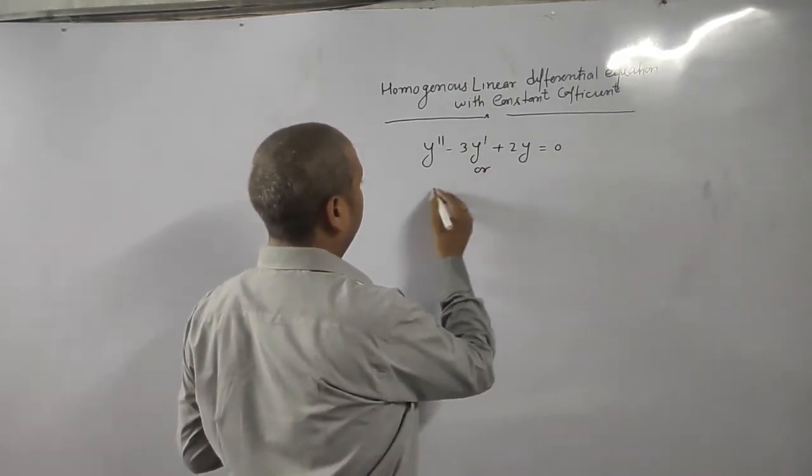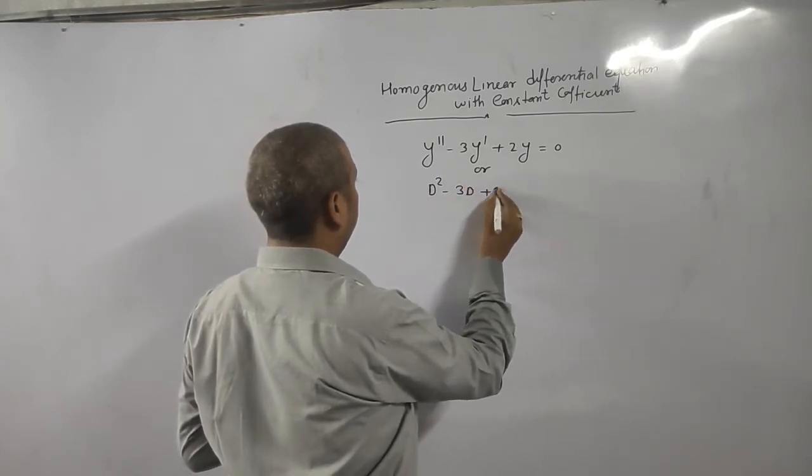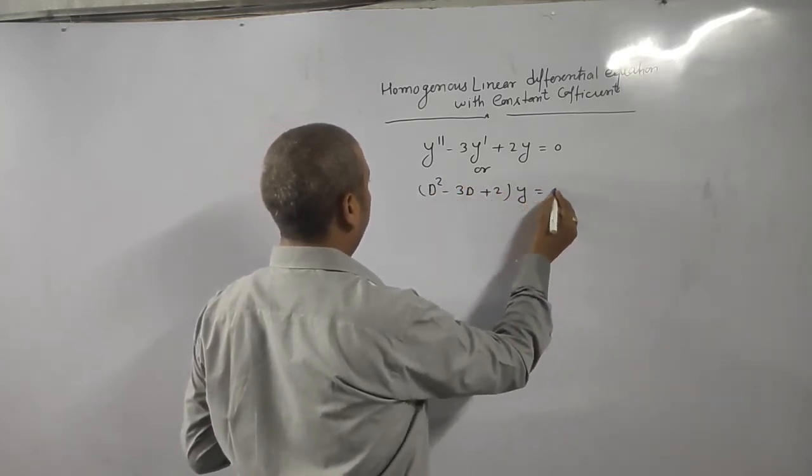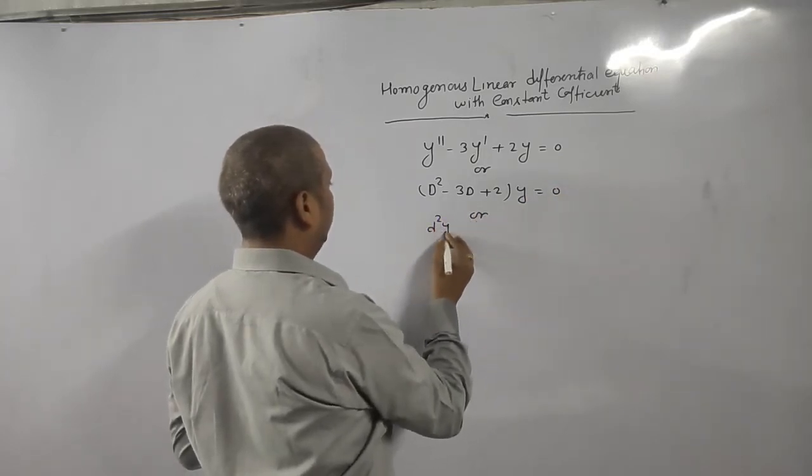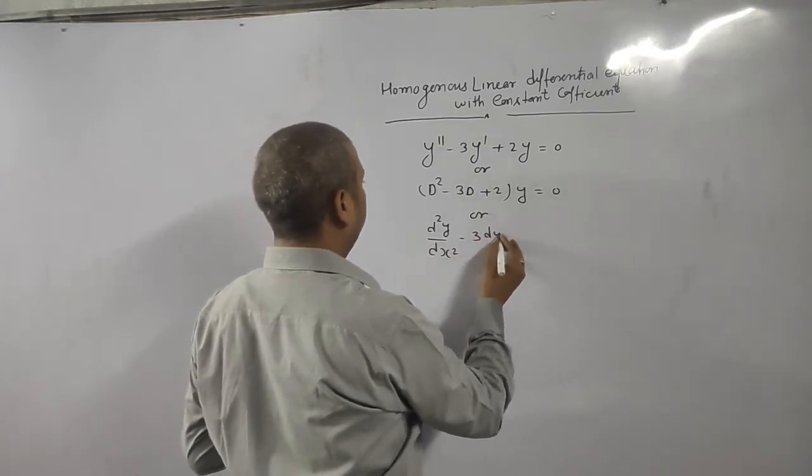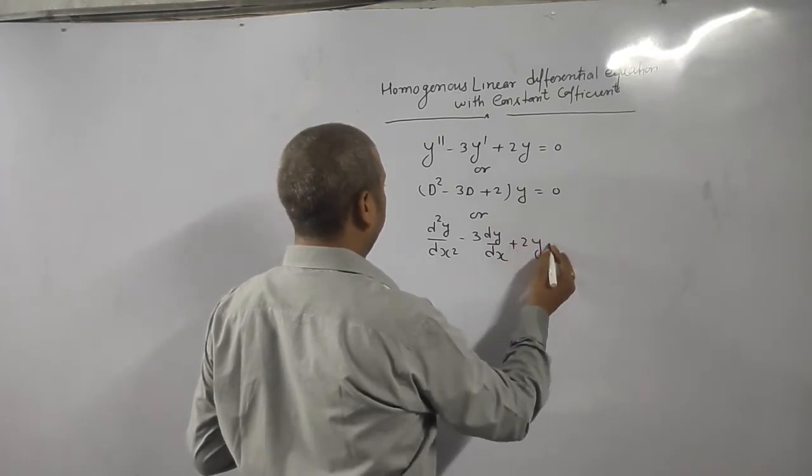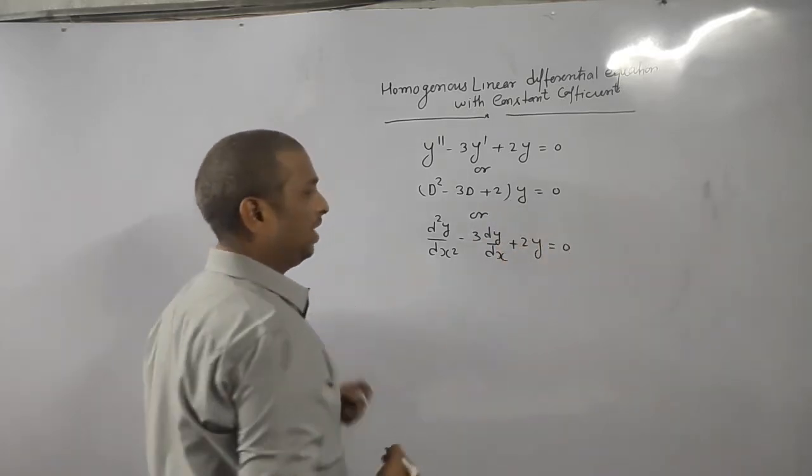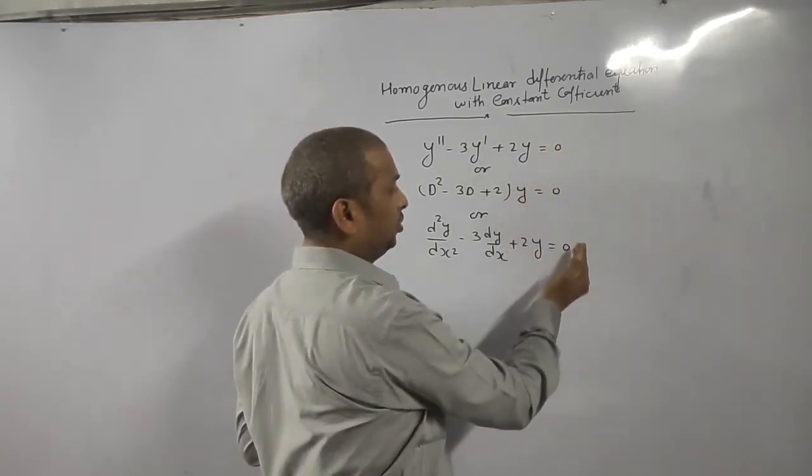Or we can write in this form also: d square minus 3d plus 2y is equal to 0. Or sometimes we are writing d²y/dx² minus 3dy/dx plus 2y is equal to 0. They can give any form, but main thing is the right hand side value must be 0.